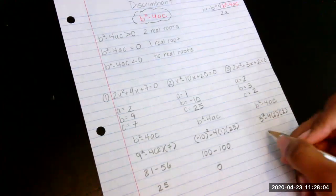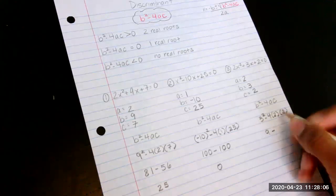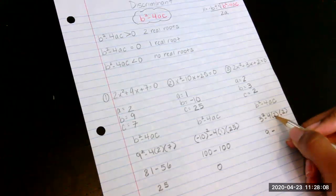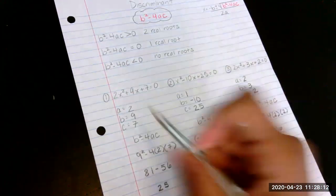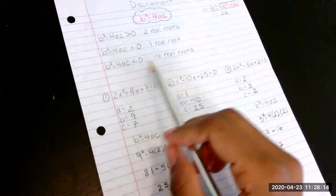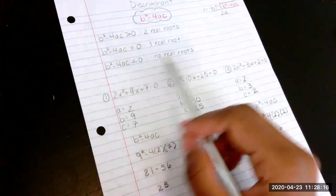So if I do the math, 3 squared is 9 minus 4 times 2 is 8, and 8 times 2 is 16. We get negative 7. So if you look here, when the discriminant is negative, which is less than 0, there are no real roots.